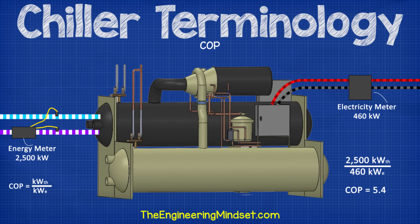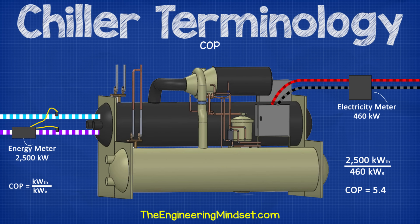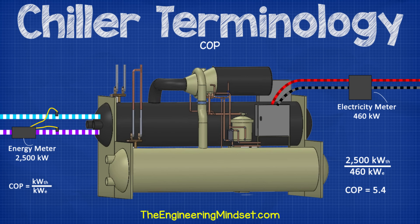COP. COP stands for the coefficient of performance. It's simply a ratio of how much cooling you get per unit of electricity you put in, which is a way of measuring the chiller's efficiency. To calculate COP, it's simply the kilowatts of refrigeration divided by the kilowatts of electricity. For example, 2,500 kilowatts of cooling divided by 460 kilowatts of electricity equals a COP of 5.4. So for every 1 kilowatt of electricity you put into the chiller, it will generate 5.4 kilowatts of cooling. It is useful for measuring the efficiency at a specific point in time under specific conditions.